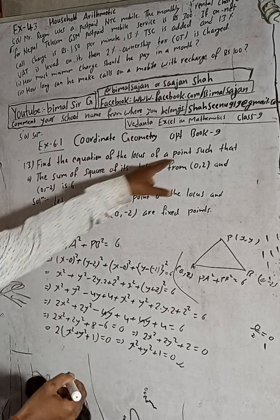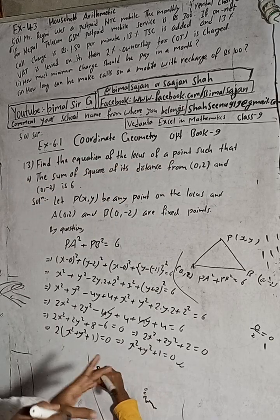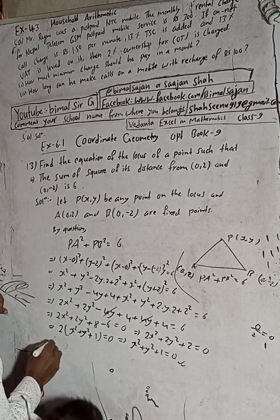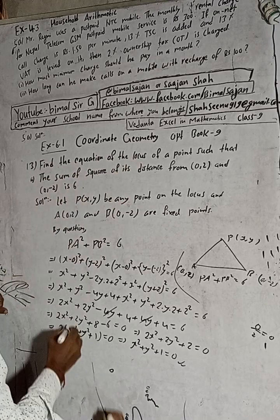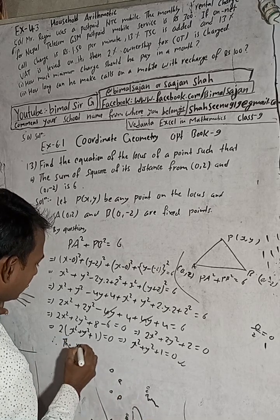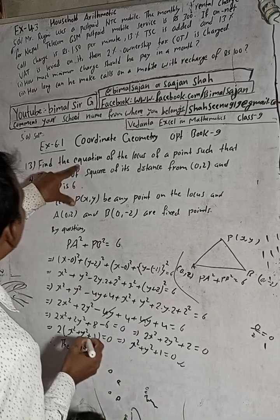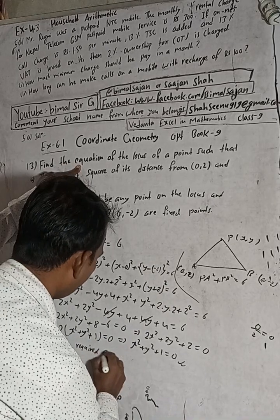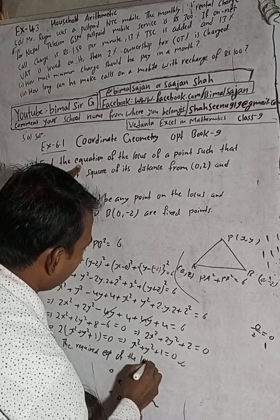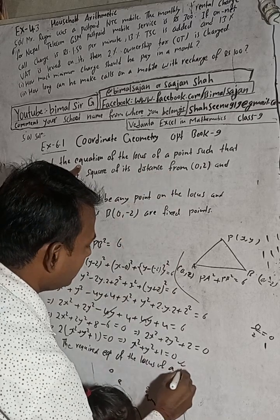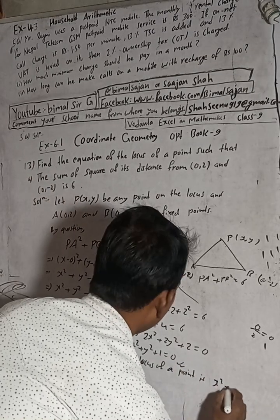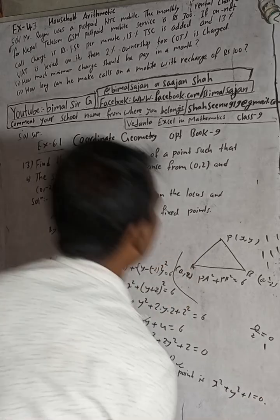Therefore, the required equation of the locus of the point is x² + y² + 1 = 0. This is our required answer.